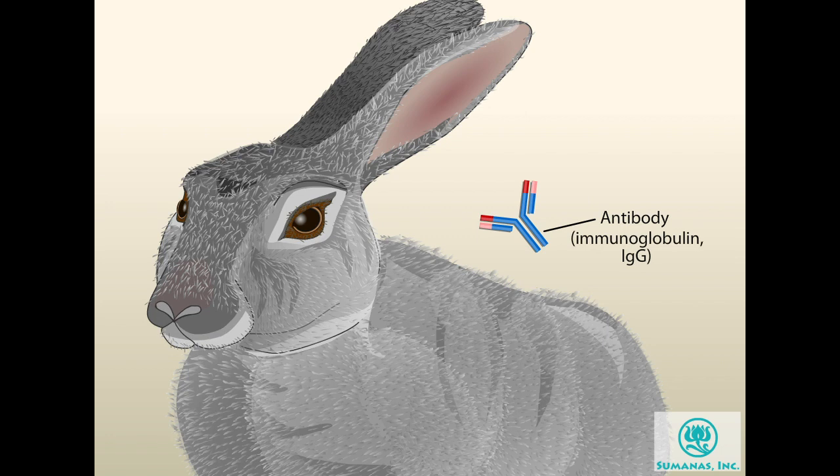Antibodies, also called immunoglobulins or IgG molecules, are used by the immune system to attack foreign substances called antigens that enter the body. This property can be used to generate antibodies of clinical interest.